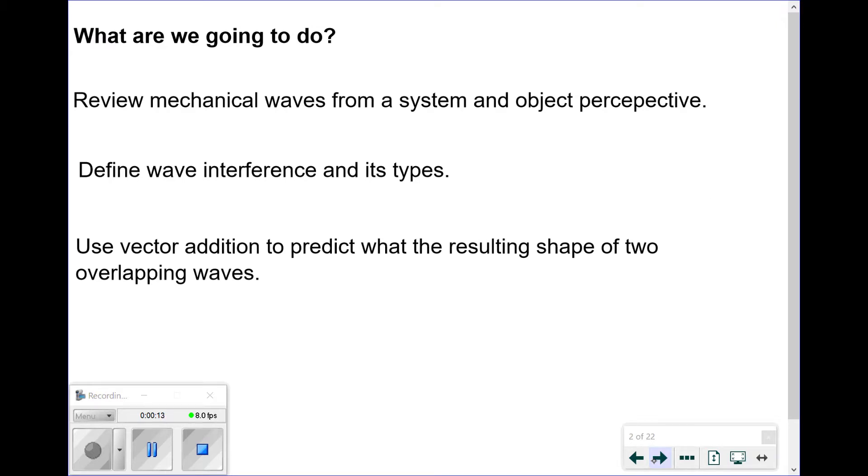We're going to review mechanical waves from both a system and object perspective, define what wave interference really is and identify its different types, and use vector addition to predict what the resulting shape would be when two or more waves overlap.